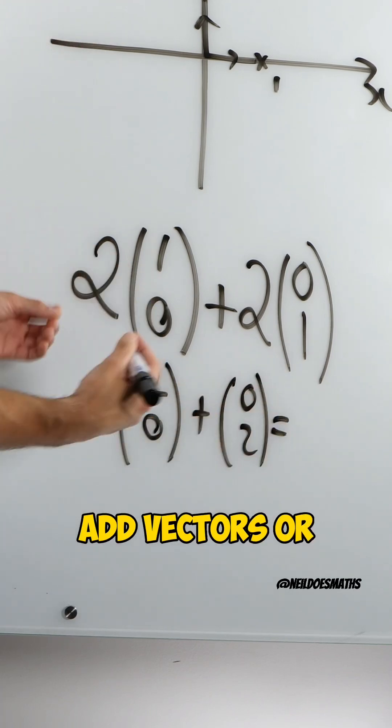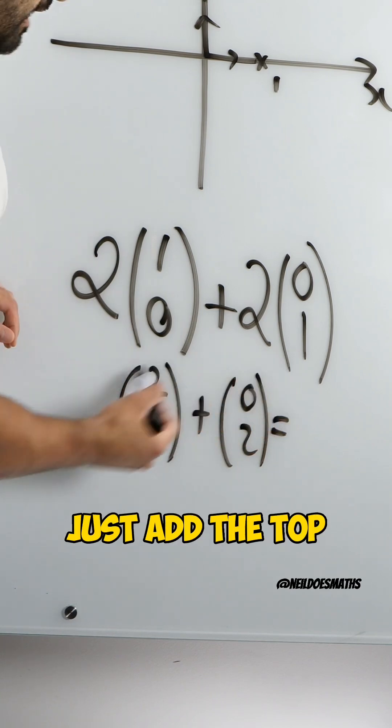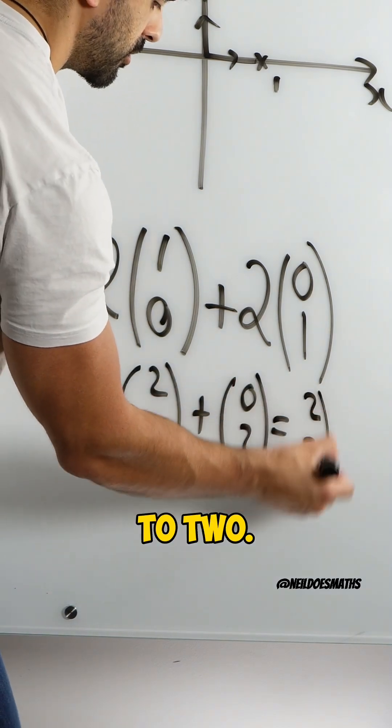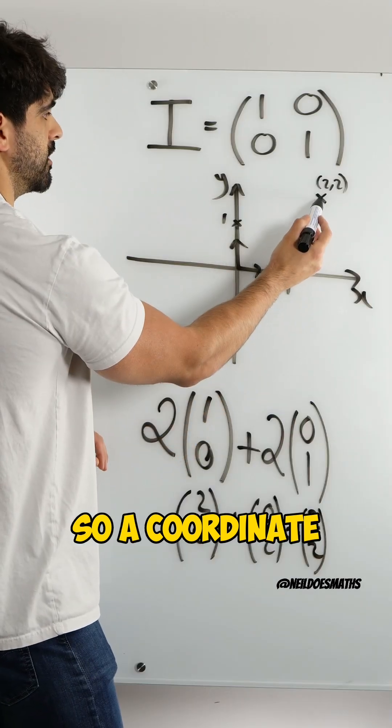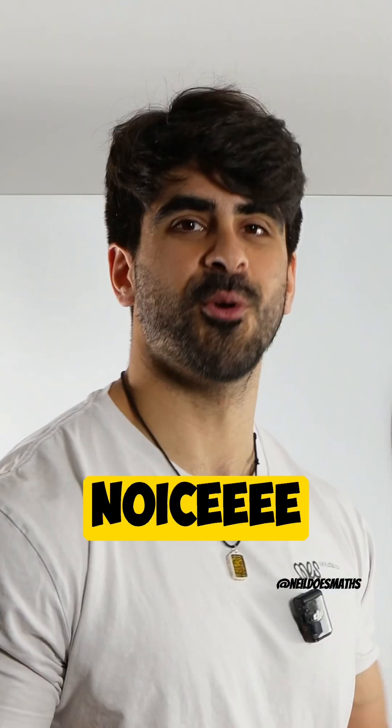And when we add vectors or matrices, we just add the top and the bottom. 2, 2. So a coordinate is just represented vertically. Nice.